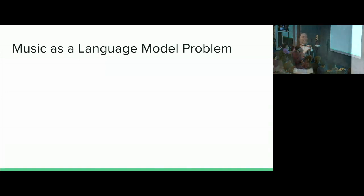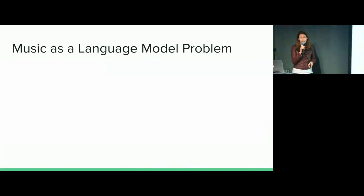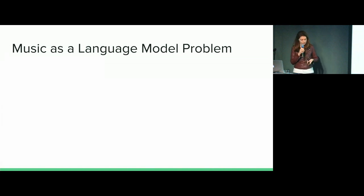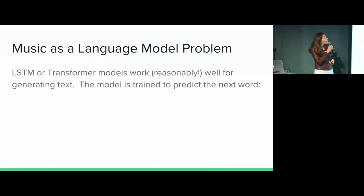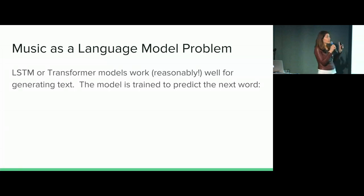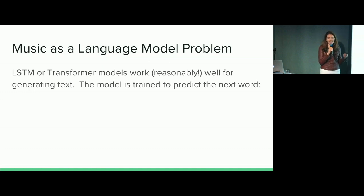The idea of this is that there's been a lot of progress in language modeling recently. We have two main architectures that get used right now: LSTMs and transformers. I don't have time to go into them, but feel free to catch me afterwards — I can talk about this.